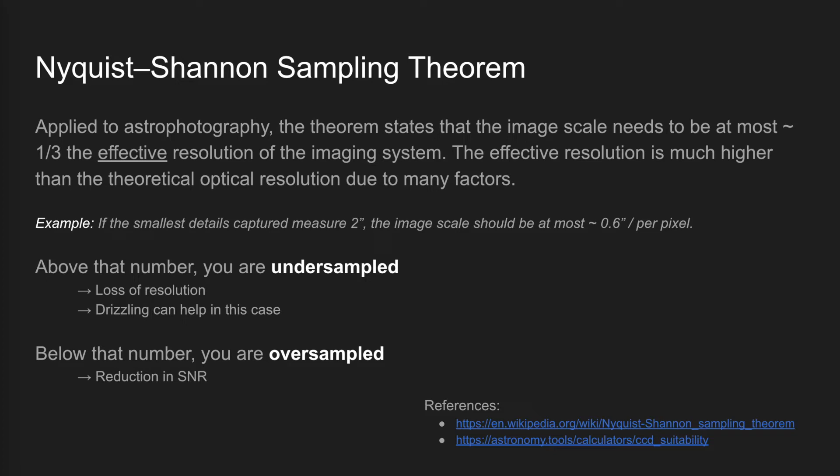If you are above that number, you are what's called oversampled, and being oversampled is also not great, because your image signal-to-noise ratio — or SNR — will not be as high as it can be. Signal-to-noise ratio is critically important when imaging deep-sky objects.